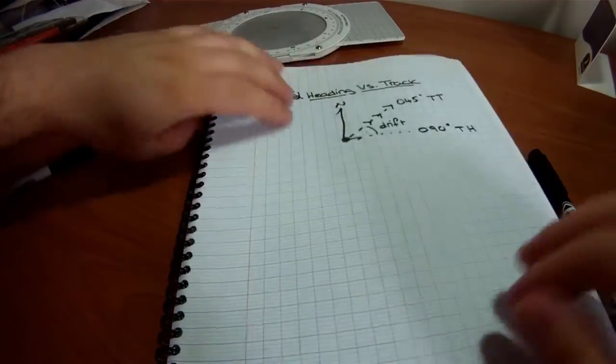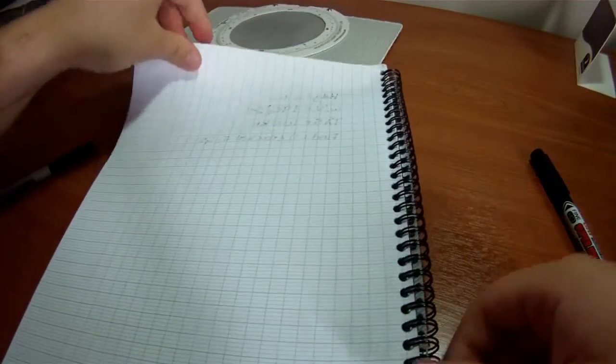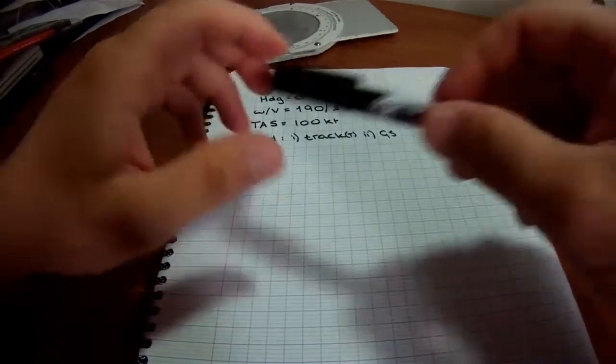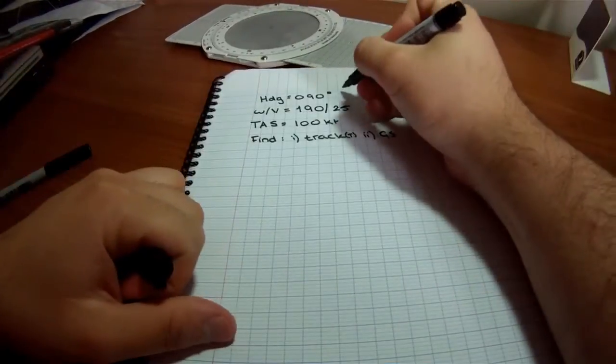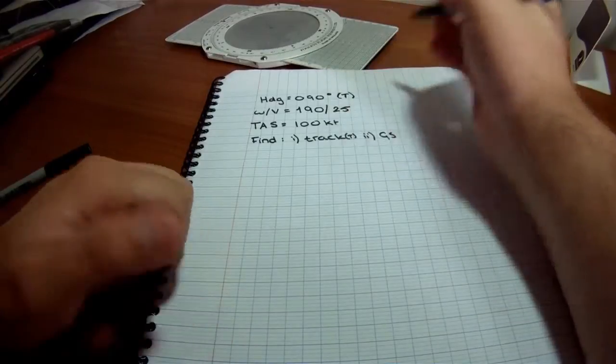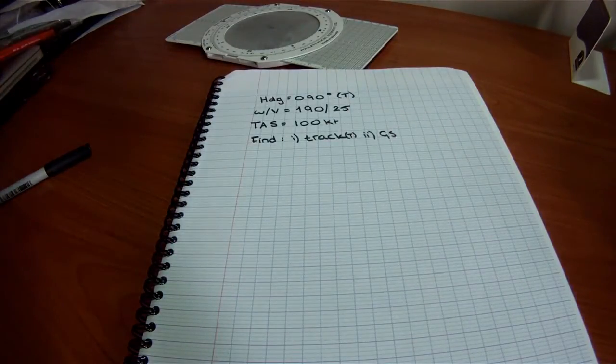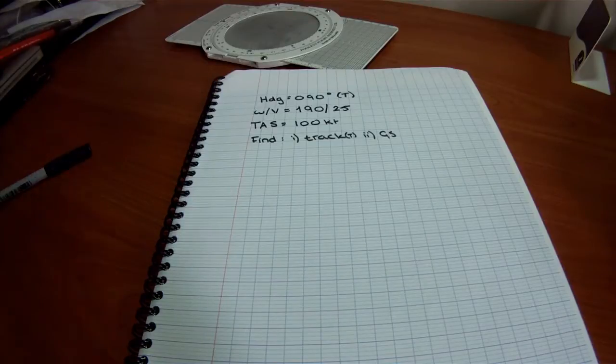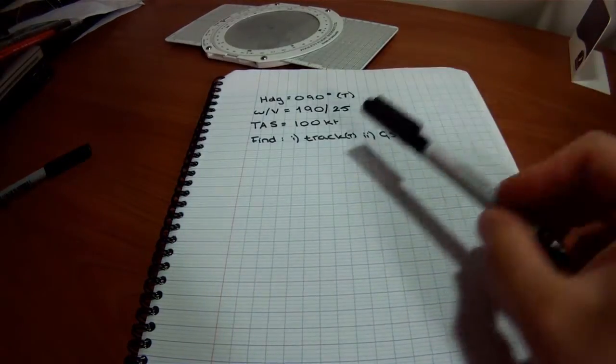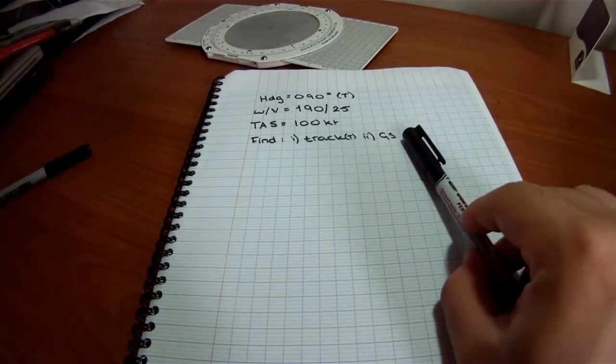Let's say we are given this information. The true heading that we're flying is 090 degrees true. Wind is 190 degrees, 25 knots. TAS is 100 knots, and we want to find the track and the ground speed.